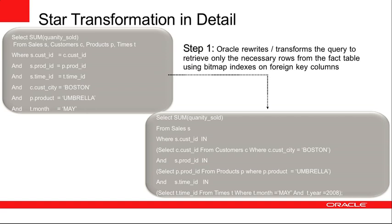In this example we're doing a join between our sales table, which is the fact table, and the customer, products, and time dimension tables. You'll notice that in a typical star query there are no predicates or filters on the sales table or fact table — all of the filters come on those dimension tables. Customer city needs to be Boston, the product is umbrella, and the month and year are May 2008. The sales table is joined to all of the dimension tables and all the filters are on those dimension tables.